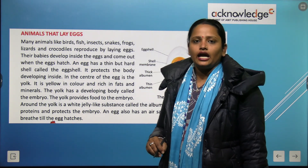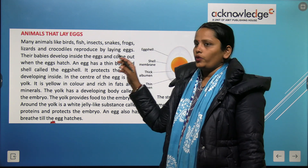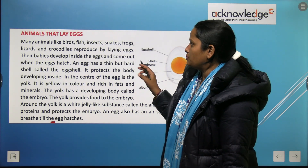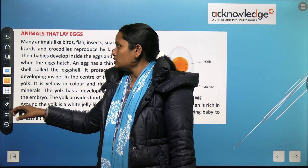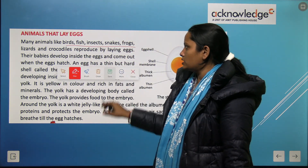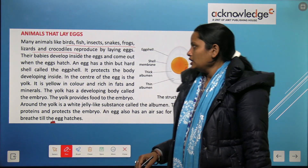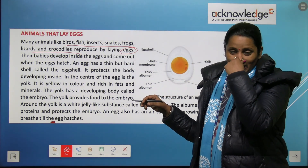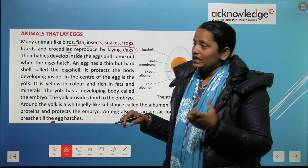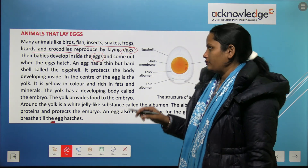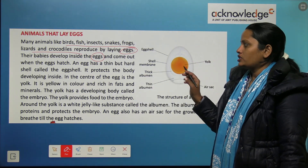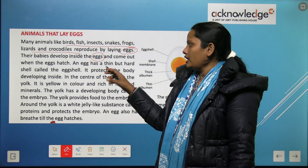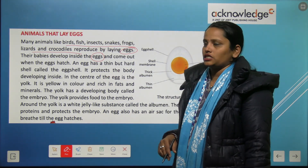Many animals like birds, fish, insects, snakes, and so on lay eggs. Their babies develop inside eggs. They come out when the egg hatches. An egg has a thin but hard shell called the eggshell, which protects the body inside.